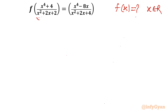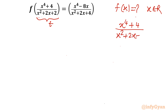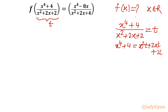Let us give a try for the substitution method. If I substitute this value equal to t — let me write x⁴ + 4 divided by x² + 2x + 2 equal to t — and cross multiply, we get x⁴ + 4 = x²t + 2xt + 2t. Now our objective is to write x as a function of t, which won't be easy and would be the lengthiest process, so let us think of another approach.